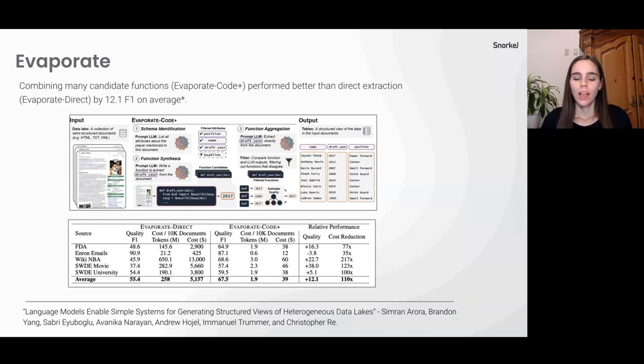And so the reason I wanted to sort of highlight this paper and kind of call that out is because they explored two approaches. They explored just using direct extraction, which they call evaporate direct. And then also by using the LLM to generate candidate functions, which they combined using weak supervision. So they call this evaporate code plus. So this is a paper from Professor Chris Ré's lab written by some of his students quite recently. And they found that actually evaporate code plus performed better than direct extraction by 12.1 F1 points on average, which is kind of incredible. So you can use this approach of still using the incredible code generation capabilities of LLMs, but not have to do a linear pass through all of your documents. And you're still able to extract out the kind of entities that you would want from these documents.